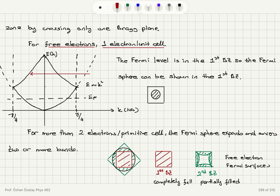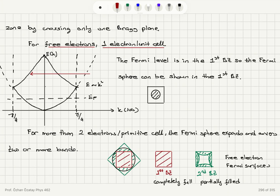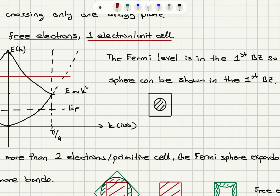If the Fermi level is in the first Brillouin zone, only the first zone is shown — this is the Fermi sphere for one electron per unit cell. With N atoms, we have N k-levels available, but since there is only one electron per unit cell, we occupy half of these states. For each k value, we can have a spin-up or spin-down electron, so half of the first Brillouin zone is empty and half is full.